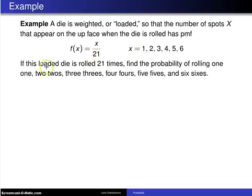If this loaded die is rolled 21 times, find the probability of rolling one 1, two 2's, three 3's, four 4's, five 5's, and six 6's. Well, this is the multinomial distribution.